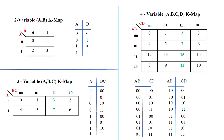In a 2-variable K-Map, there are 4 cells, represented as 2 to the power 2. A 3-variable K-Map has 8 cells, that is 2 to the power 3. A 4-variable K-Map has 16 cells, that is 2 to the power 4. For a 2-variable map, the variables are A and B, with combinations 00, 01, 10, 11. For 3 variables it is A, B, C starting from 000 up to 111. For 4 variables it ranges from 0000 to 1111.